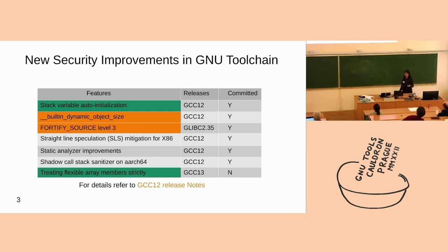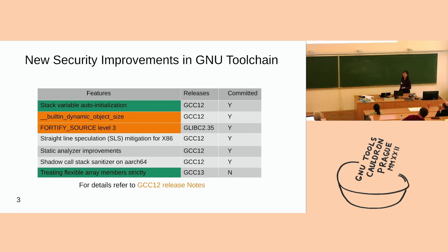This is a list of the new security improvements in the GNU toolchain. The highlighted four items are the major topics we will focus on today. The blue ones I will present, and the orange ones Sidesh will present. The topics we are talking about today are mostly in the middle-end and GLIBC. The straight-line speculation and the shadow call stack sanitizer are all back-end stuff.